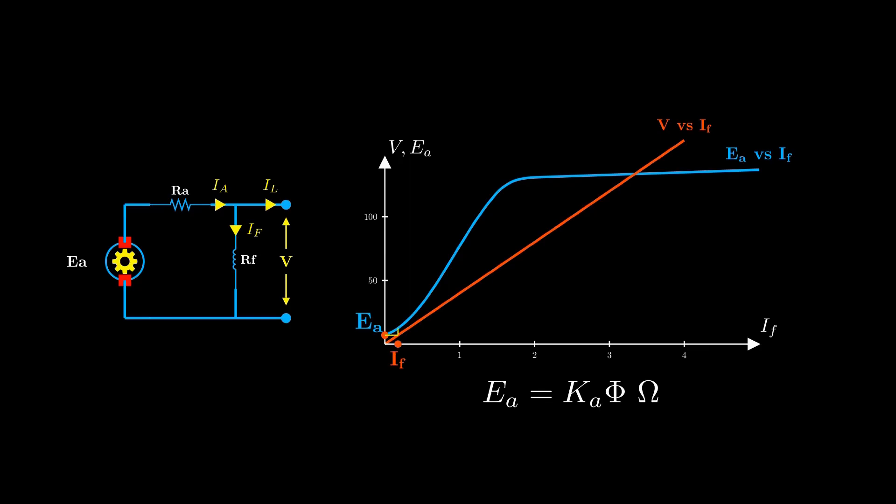The magnetization curve illustrates this. As field current increases, so does the generated EMF. This buildup continues until the iron core of the generator reaches magnetic saturation.